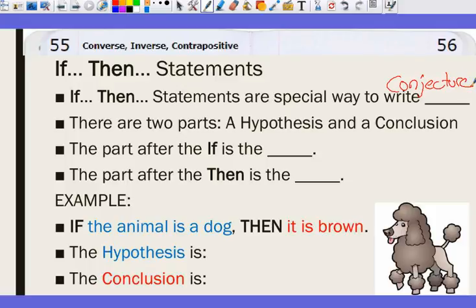It comprises two parts, a hypothesis and a conclusion. I have a question. In a story, what comes first? What's the end of a story called? A conclusion. So where do you guys think the conclusion is going to go? At the end. So look at this example here. The red part is the conclusion. So the part after the then is the conclusion. Therefore, the part after the if has to be what? The hypothesis.